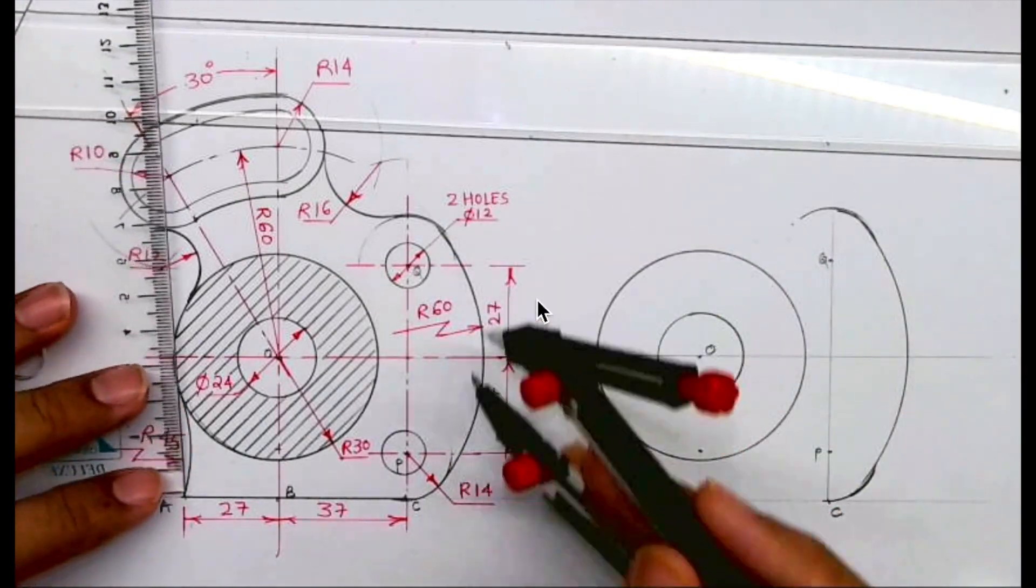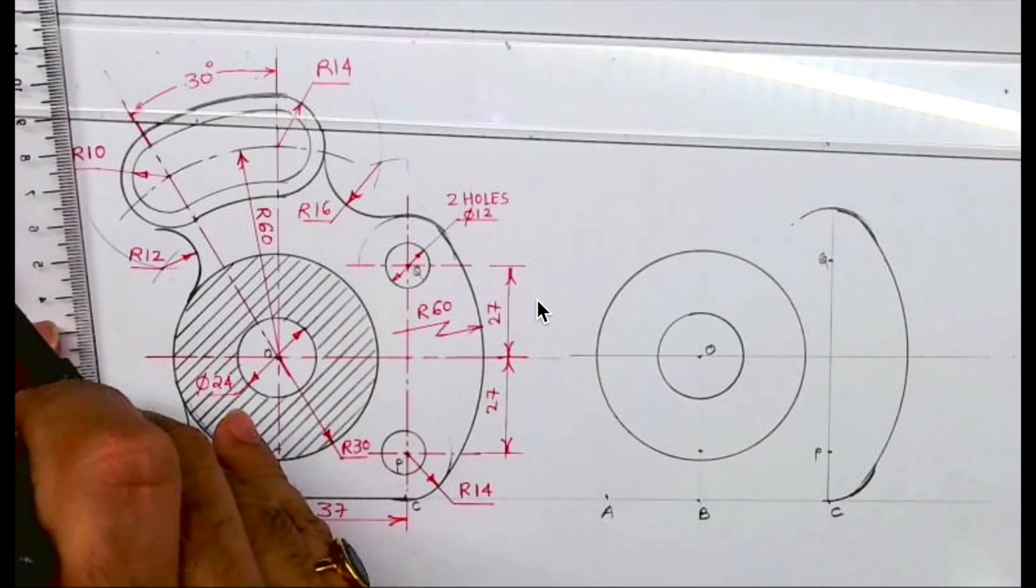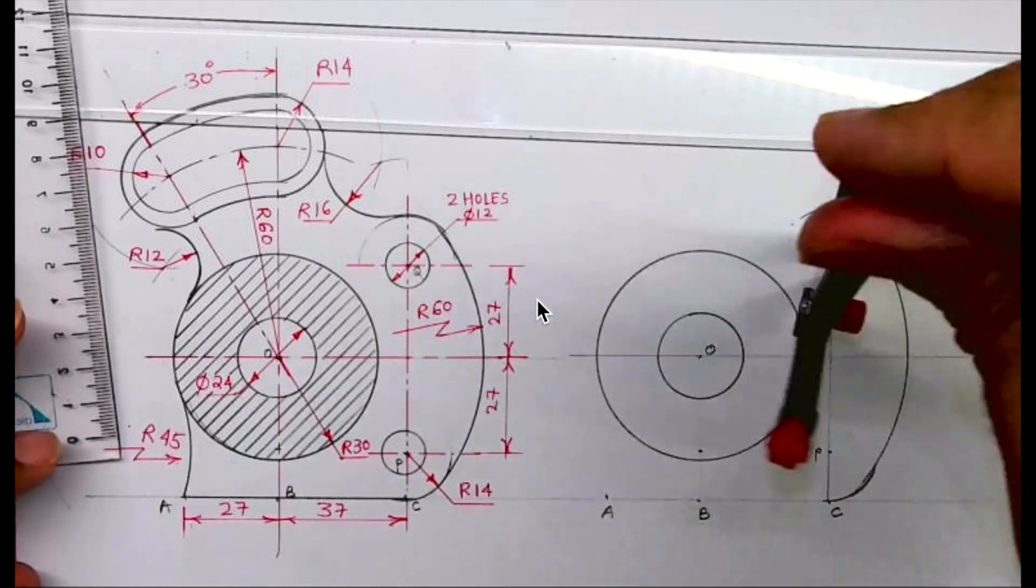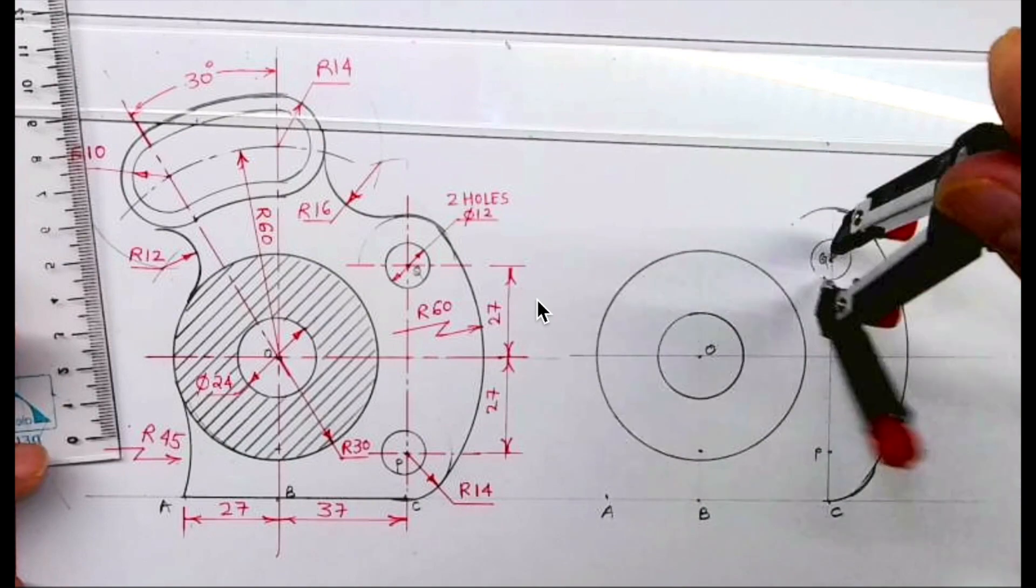After that, we have to draw two holes diameter 12, so radius 6. From P and Q we can draw radius 6.